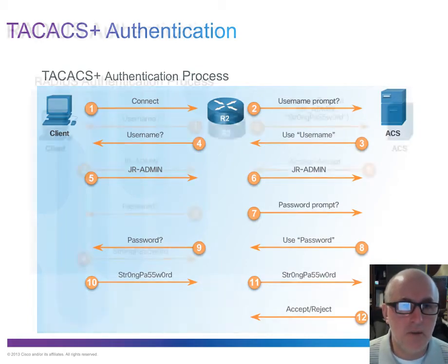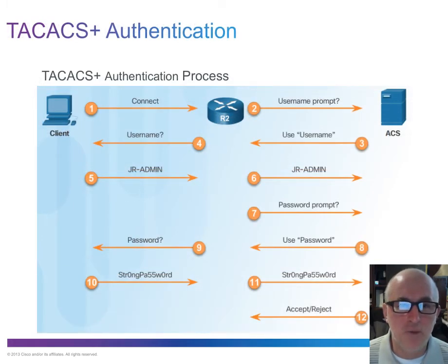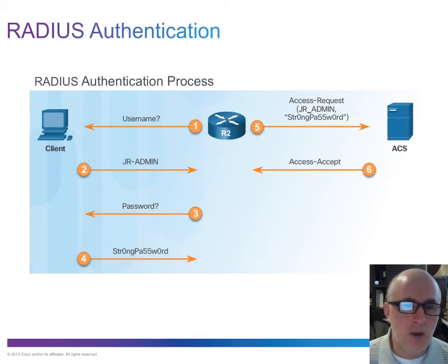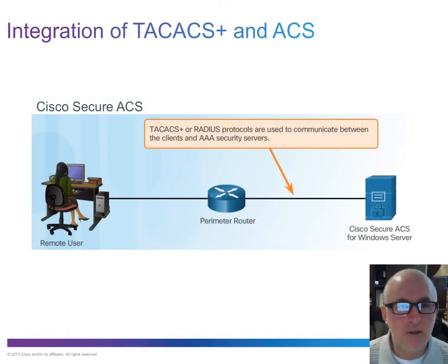Both TACACS and RADIUS serve as a conduit for sending a username and password to a server for remote authentication, sending the result back, and handling authorization and accounting. Notice RADIUS has fewer communication steps between the router and the ACS server than TACACS does. The client-to-router steps remain the same for both — the difference is in the back-and-forth between the router and the server. RADIUS is faster because it has less communication overhead, uses the more efficient UDP protocol, and only encrypts certain information, reducing CPU utilization.